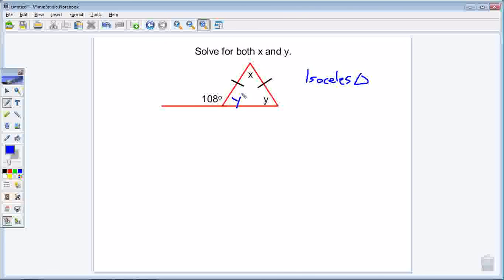Now, what I can look at is these two angles here are supplementary. I know that they are supplementary, which means they add up to 180. So, solving for y, I can say 180 minus 108, this is 108, leaves me with 72.